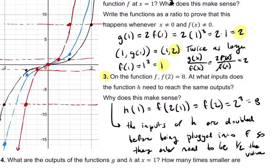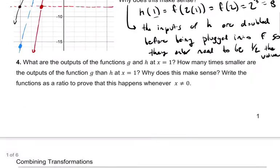And why does this make sense? Well, the inputs, I would say this, of h are doubled before being plugged into f. So they only need to be half the value. In other words, before we had to plug in 2, and now we only have to plug in 1, and 1 is half the value of 2. And that's because you're doubling. That's the relationship here. H of x equals f of 2x. Something like that.